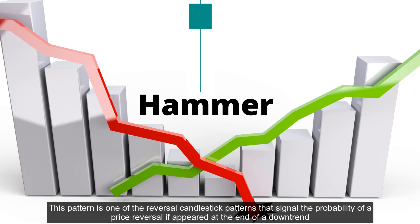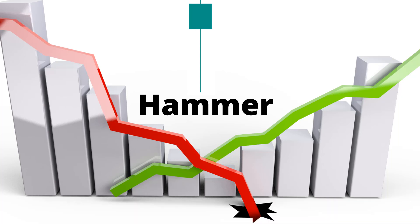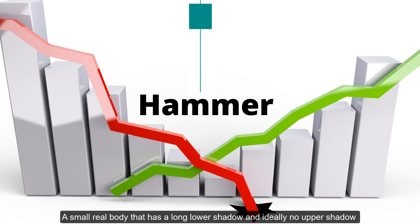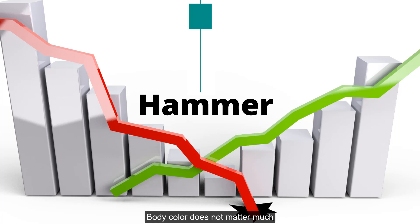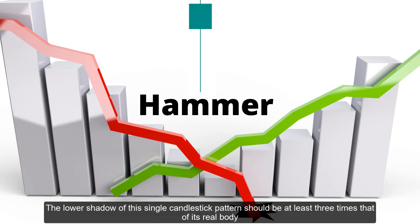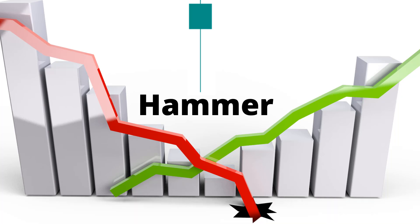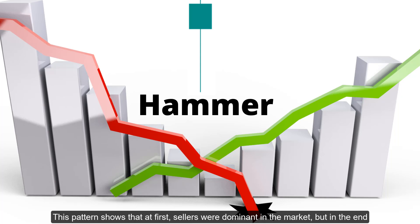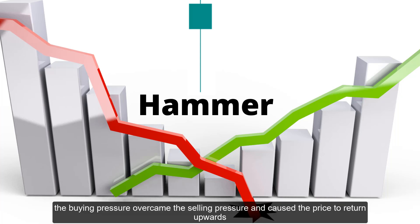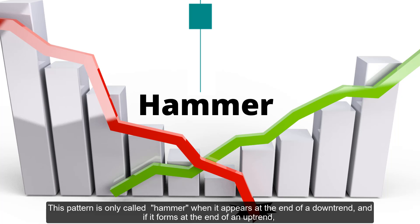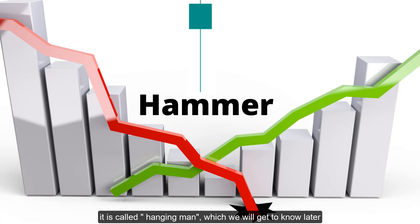The hammer pattern is one of the reversal candlestick patterns that signals the probability of a price reversal if it appears at the end of a downtrend. This pattern has the following characteristics: a small real body with a long lower shadow and ideally no upper shadow. Body color does not matter much. The lower shadow of this single candlestick pattern should be at least three times that of its real body. This pattern shows that at first sellers were dominant in the market, but then the buying pressure overcame the selling pressure and caused the price to return upwards. This pattern is only called hammer when it appears at the end of a downtrend, and if it forms at the end of an uptrend, it is called hanging man, which we will get to know later.